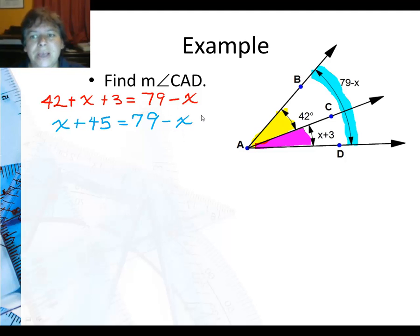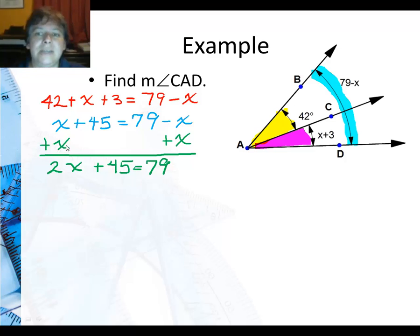A plus x is better than a minus x, so I want to get rid of that. And the way to undo subtracting an x is to add an x. So now I have 2x plus 45 equals 79. These simplify and that simplifies to 2x.